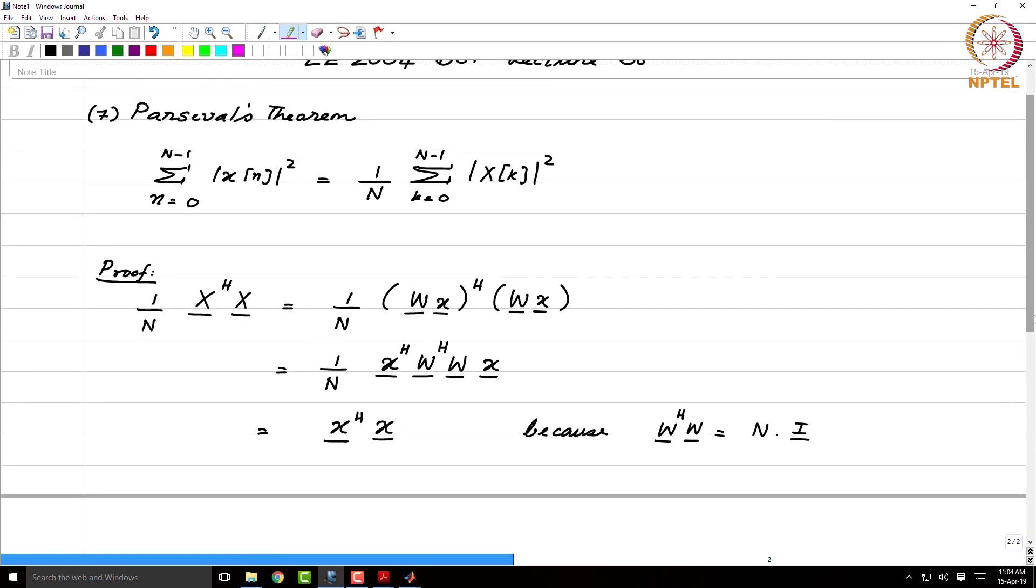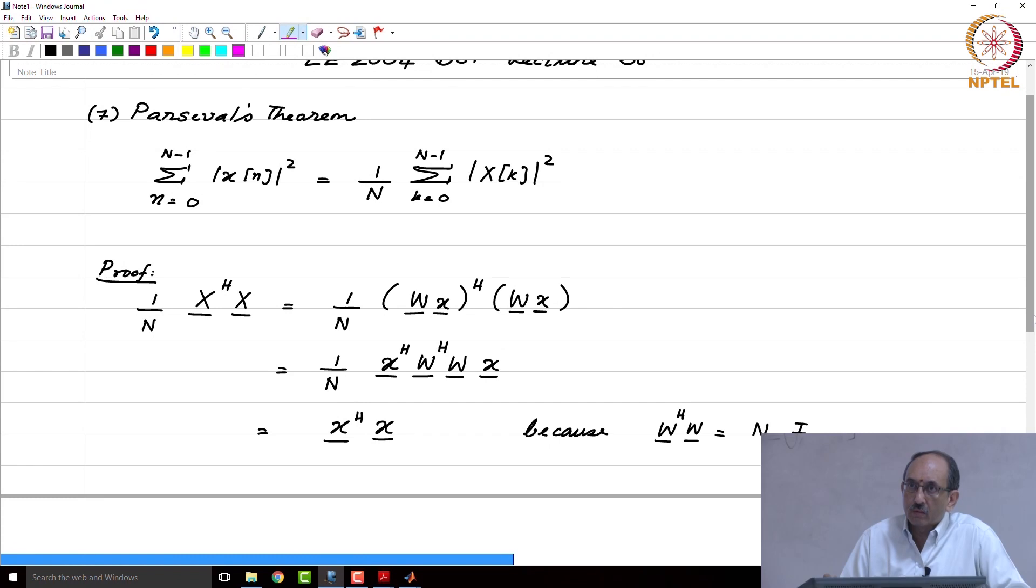And such matrices are called unitary. And the DFT is a unitary transform, it is norm preserving.